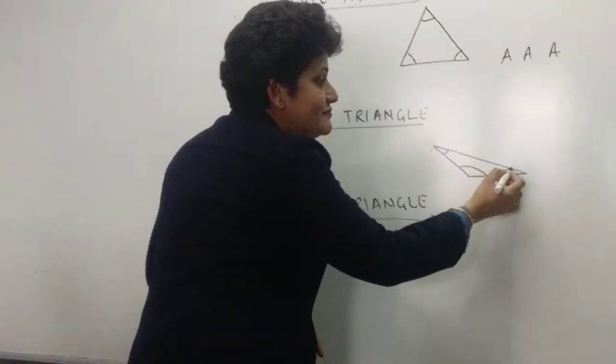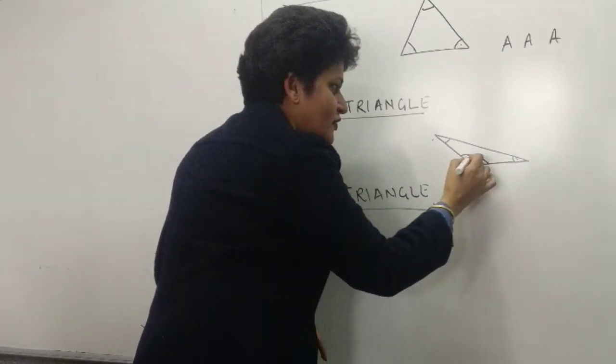And can you see, there is only one obtuse angle in an obtuse triangle. And the other two are? Tell me. Acute. Acute. So this is obtuse.